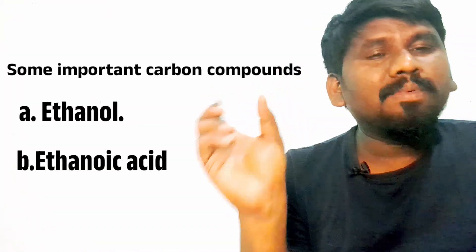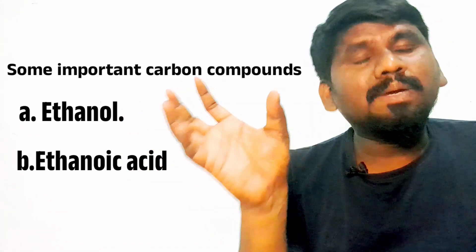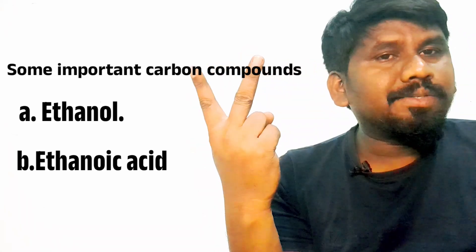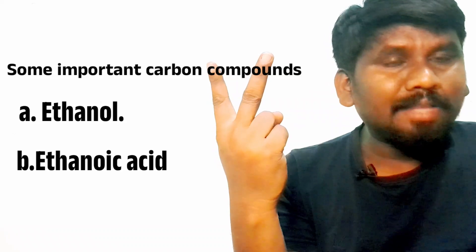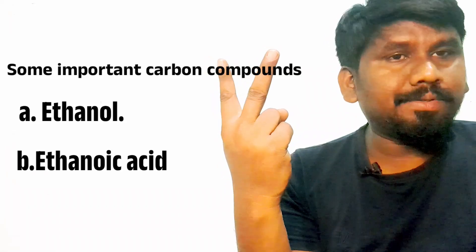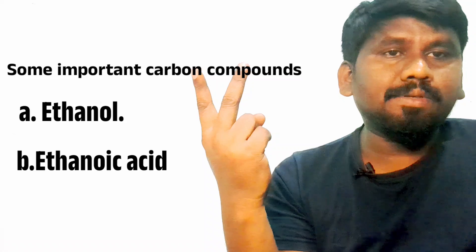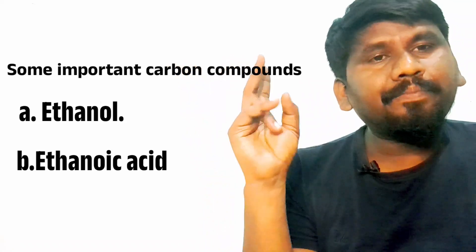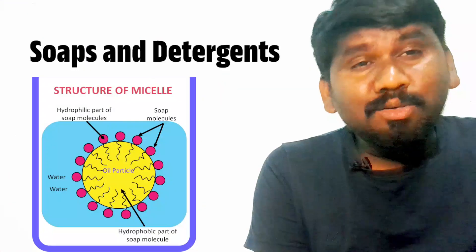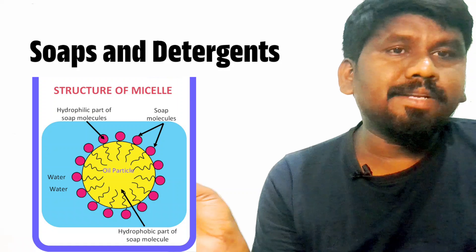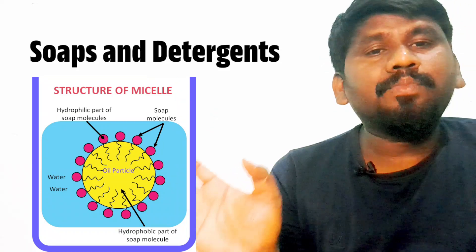After that, under the topic of some carbon compounds, they asked about two: one is ethanol — its physical properties and chemical properties — and ethanoic acid. So only the physical and chemical properties of ethanol and ethanoic acid. And the last topic of this chapter is soaps and detergents. So these are all the topics from your Carbon and its Compounds chapter.